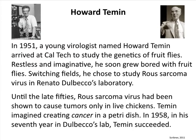Howard Temin comes into the picture in 1951. A young virologist who arrived at Caltech to study genetics of fruit flies, restless and imaginative, he soon grew bored with fruit flies. Switching fields, he chose to study Rous sarcoma virus in Renato Dulbecco's laboratory — who developed the plaque assay for animal viruses and was really into cells and using them. Until the late 50s, Rous had been shown to cause tumors only in live chickens. Temin imagined creating cancer in a petri dish, and after seven years, he succeeded.